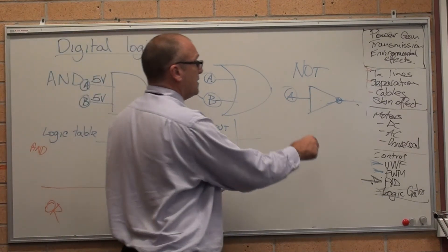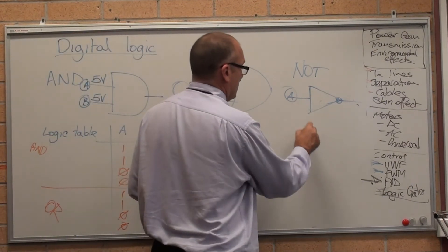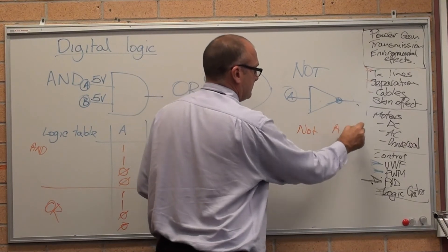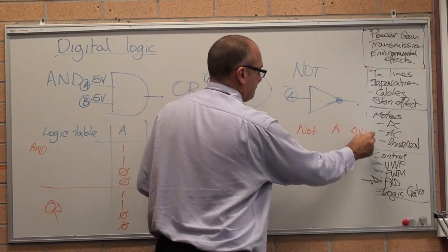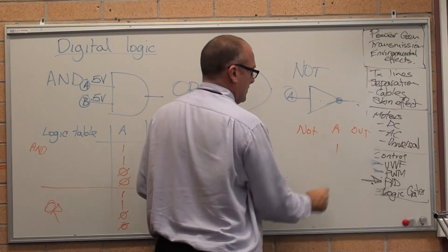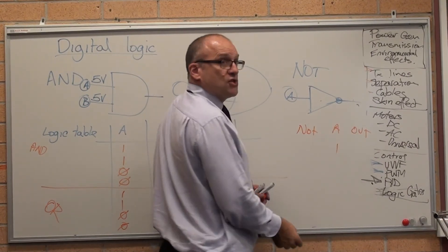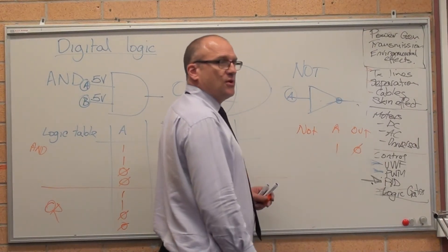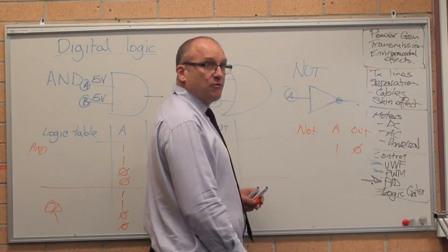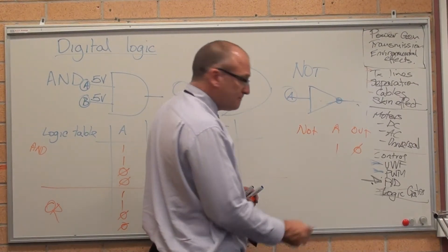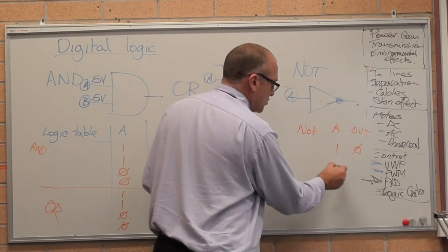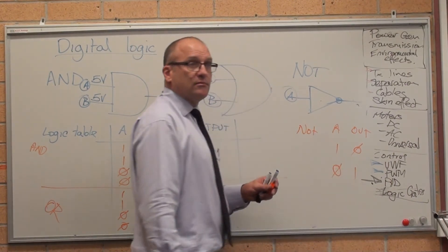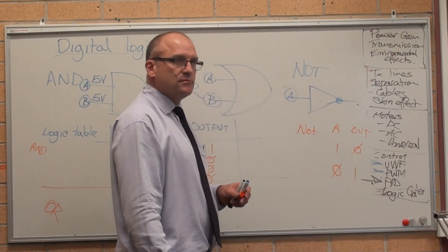And a NOT gate is simply: if there is power going in, turn it off — it's just reversing. If there is nothing going in, turn it on.